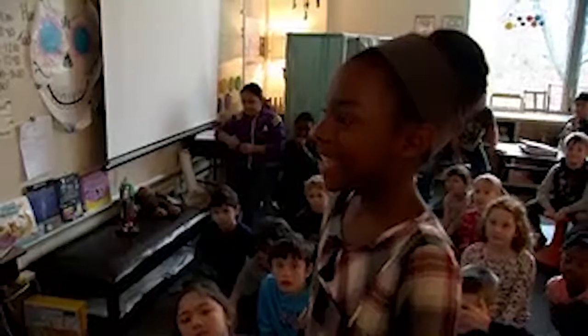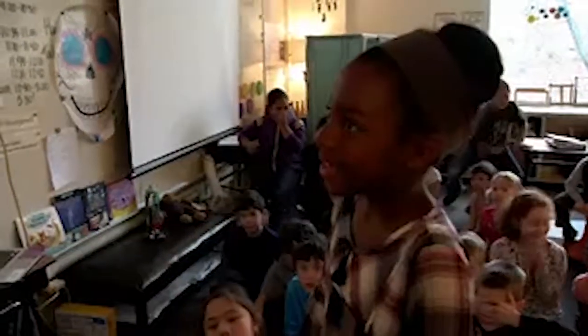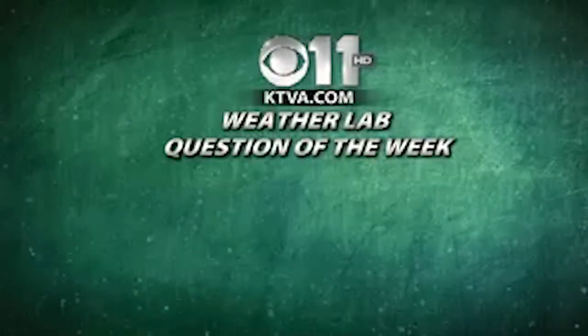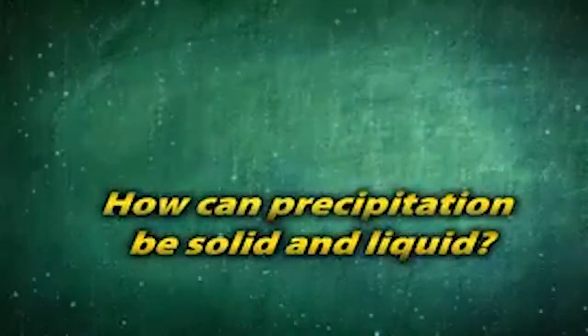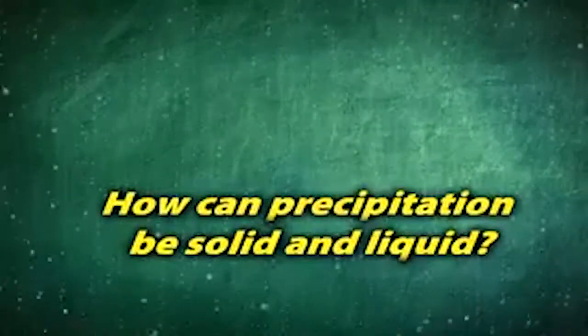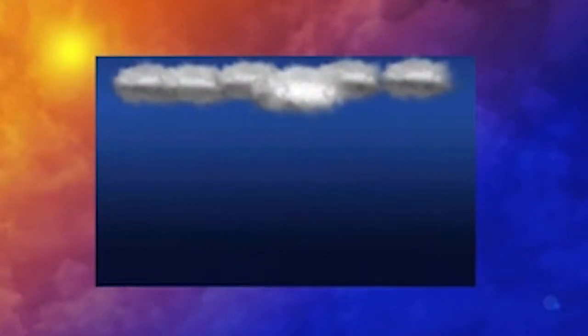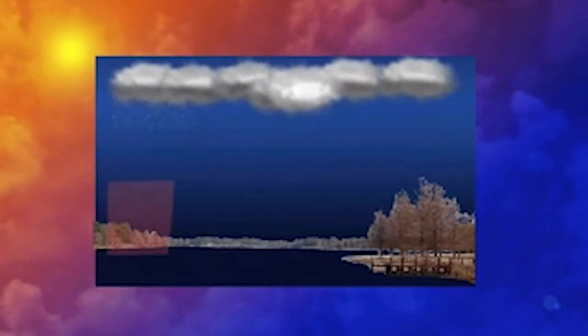How can precipitation sometimes have solids or liquids? She means snow, rain, or in between. And that is our KTVA Weather Lab Question of the Week. Inside clouds, you'll generally find a combination of liquids and solids. But a lot can happen between the clouds and the ground.